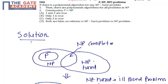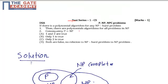This question is from data structures and algorithms on the topic of P, NP, and NP-complete problems. The question states: if there is a polynomial algorithm for any NP-hard problem, then there are polynomial algorithms for all problems in NP. Consequently, P equals NP. The options are: both 1 and 2 are true, only 1 is true, only 2 is true, or both are false.